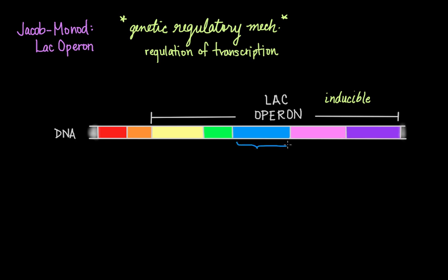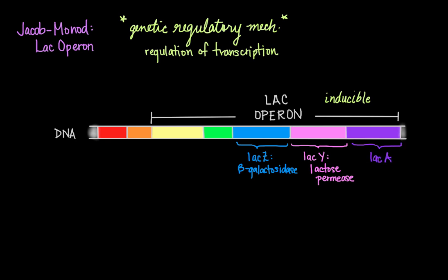There are three coordinately regulated genes in the LAC operon. The LAC-Z gene codes for beta-galactosidase, a cytoplasmic enzyme that cleaves lactose into glucose and galactose. The LAC-Y gene codes for lactose permease, a cytoplasmic membrane protein that transports lactose into the cell. Finally, the LAC-A gene codes for thiogalactoside transacetylase. Only LAC-Z and LAC-Y are actually needed for lactose catabolism; LAC-A is less important for understanding how the LAC operon works.